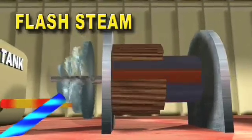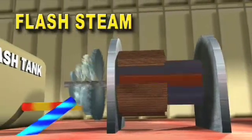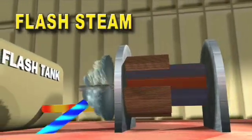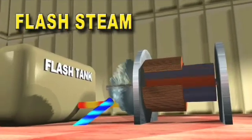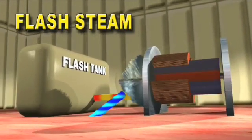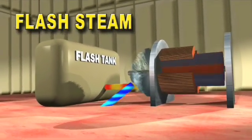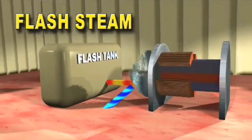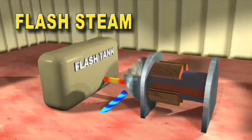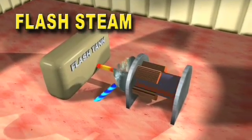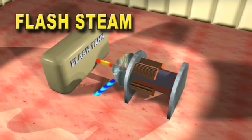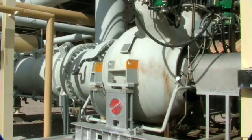Flash steam power plants are more common. Instead of injecting the steam directly from the well into the turbine, these plants collect the hot water in a flash tank first, remove the water, then inject the remaining steam into the turbine.